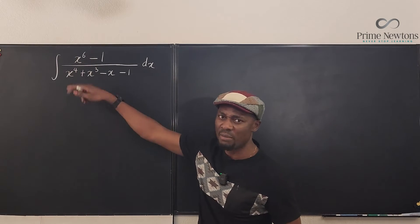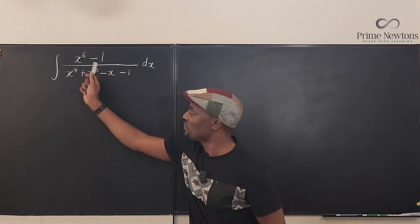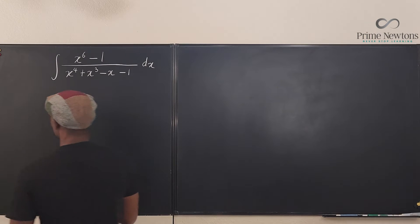So how can we factor the top? It doesn't look like we know how to, but we can write this as difference of two squares. That's the reason why this minus is here. So we can write this as the integral.